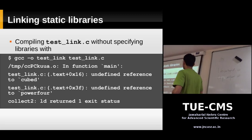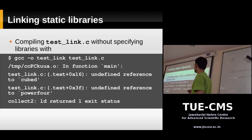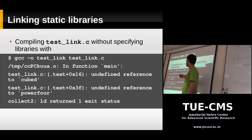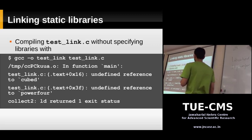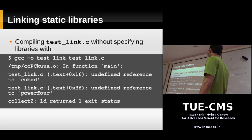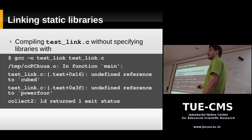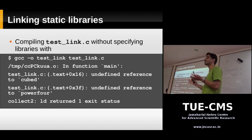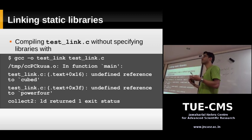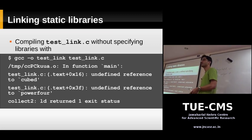Now let's use our library and link it to our main program. Suppose you compile testlink.c without supplying any library — gcc -o testlink testlink.c. Look at the error you get: in function main, there's an undefined reference to cubed, and an undefined reference to power4. That means you're calling functions called cubed and power4 but these two functions are not defined anywhere. It doesn't know what code these functions have. This is the error you get when you don't link your library.